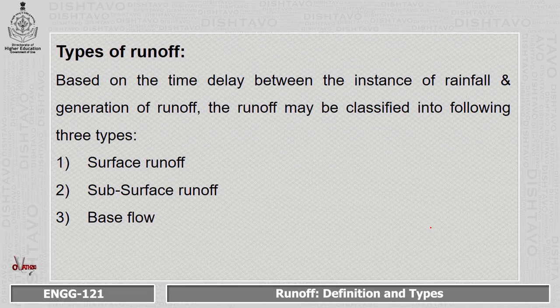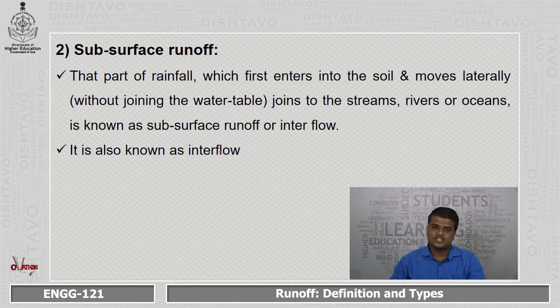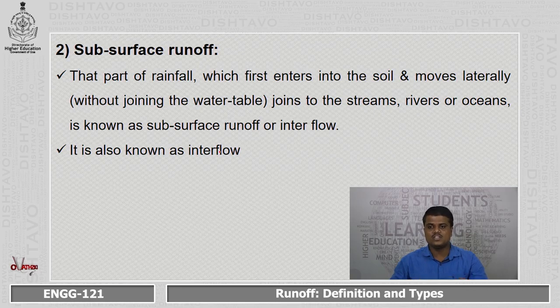There are three different types of runoff: surface runoff, subsurface runoff, and base flow. Surface runoff refers to water flowing over the ground surface. It occurs when all losses — that is, percolation and depression storage — are satisfied, and only then does water flow over the ground surface. Subsurface runoff is that part of water which enters into the soil crust and then flows laterally without meeting the water table, and it is also called interflow.